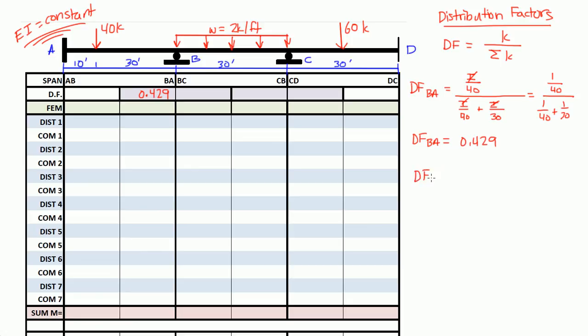And now we need a distribution factor for BC. So on the right side of joint B. And again, it's I over L. And the k value up here is the k value for the span we're looking at. And the span in this case is BC. So I over the length of BC, which is 30, divided by the k values for the two spans joint B is touching. Joint B is touching BA and BC. So the k value for BA is I over 40, plus the k value for span BC. And the length of BC is 30.